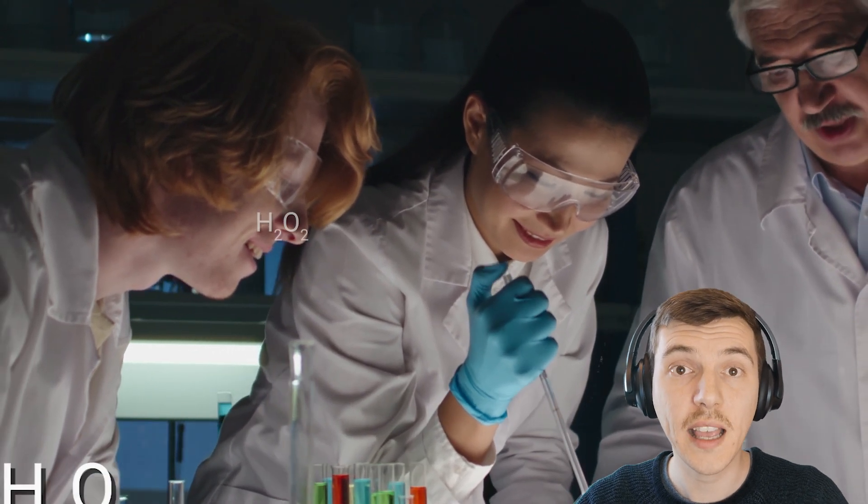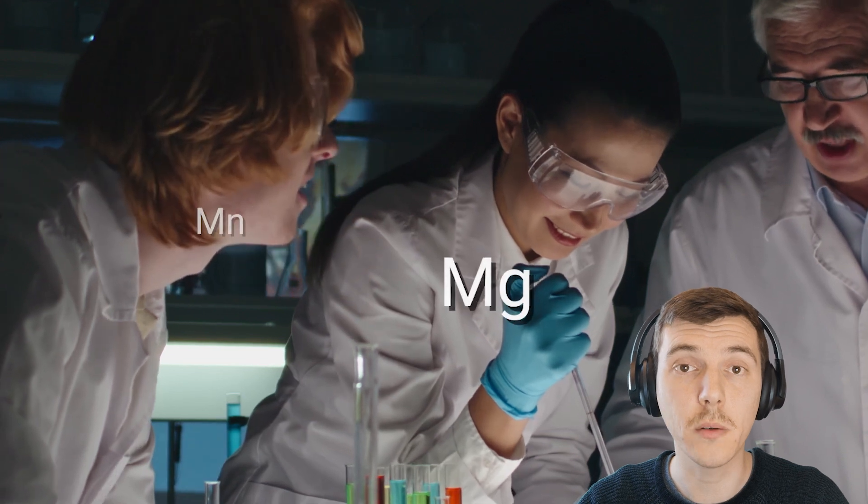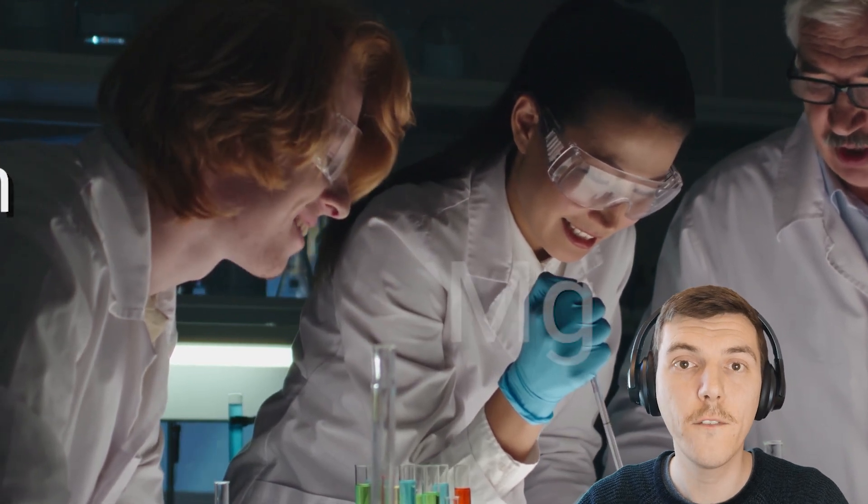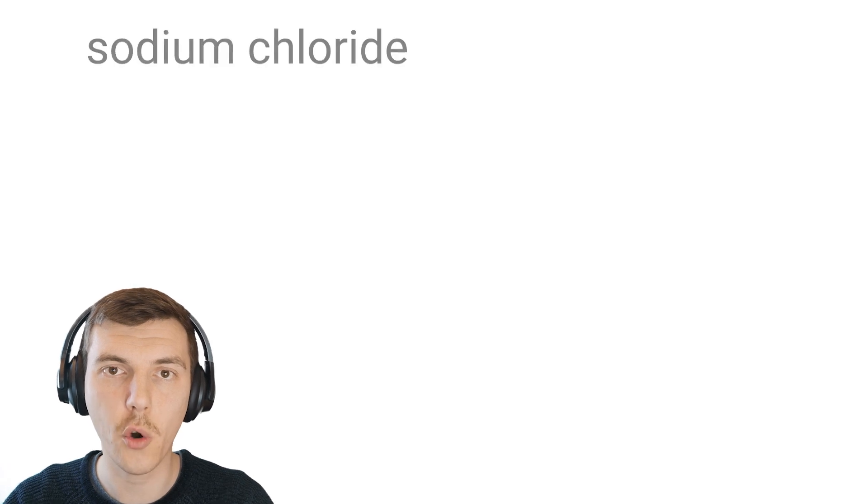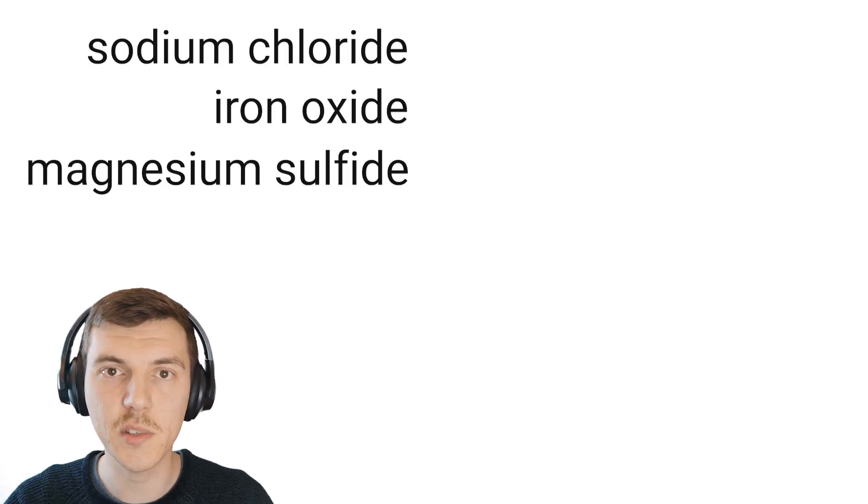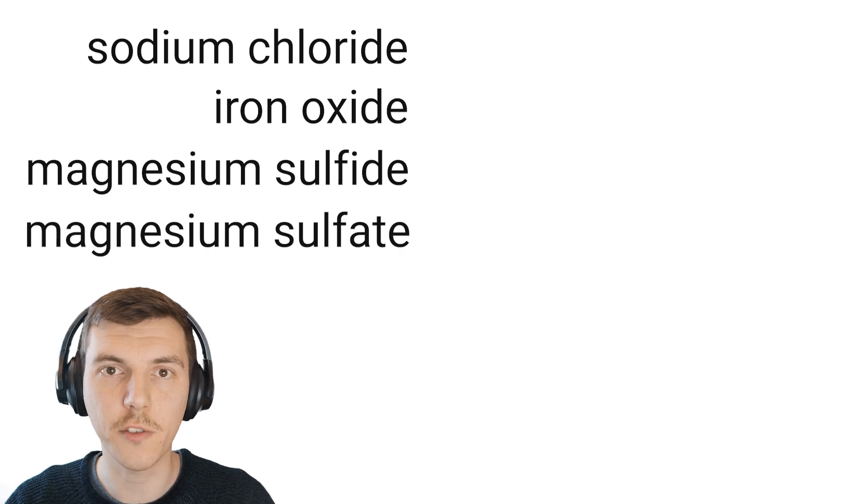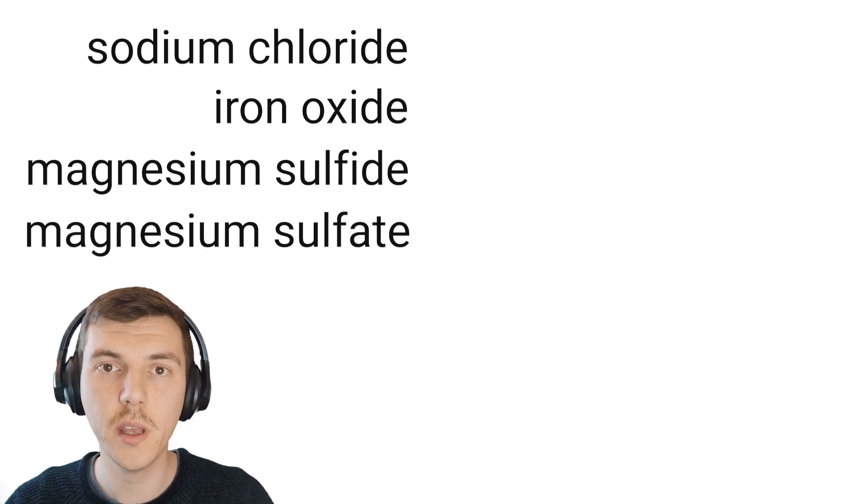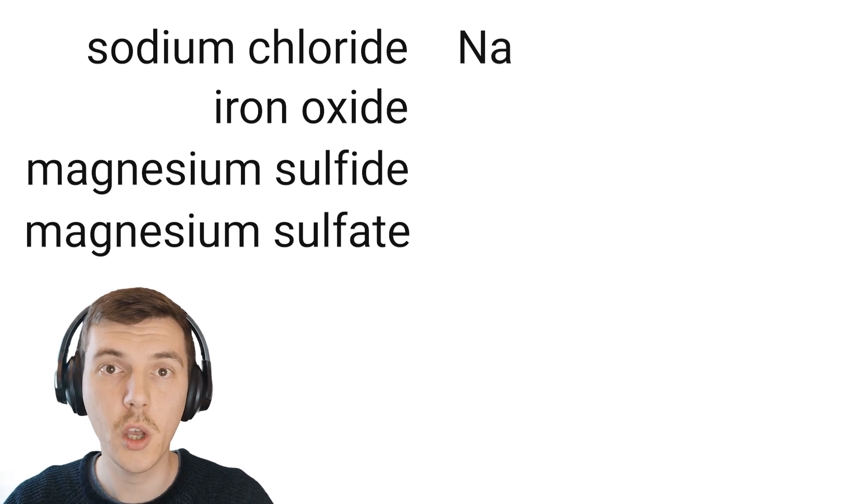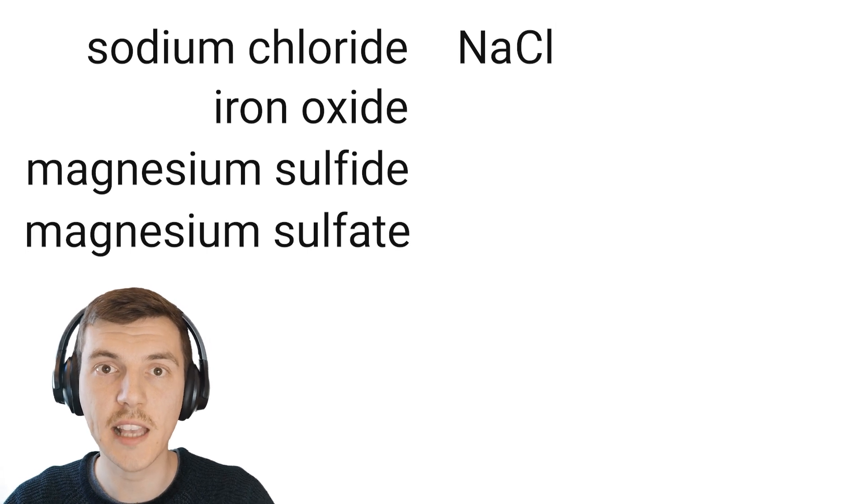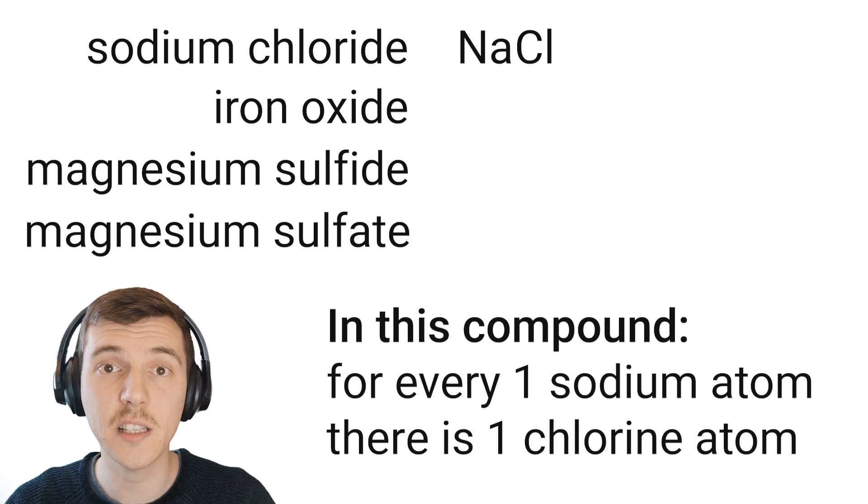And the same can be applied to chemical compounds. When we combine chemical symbols of different elements to make a compound, we write down the chemical formula. Let's look at the examples we've already been looking at: sodium chloride, iron oxide, magnesium sulfide, and magnesium sulfate. We know that sodium and chlorine react together to make sodium chloride. Sodium's symbol is Na, chlorine's symbol is Cl, so sodium chloride is, you guessed it, NaCl. What that formula tells us is that for every one atom of sodium, there is one atom of chlorine.